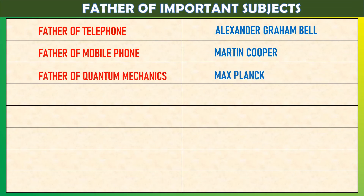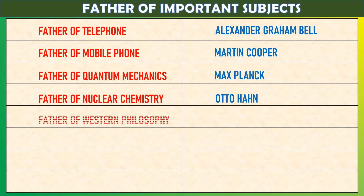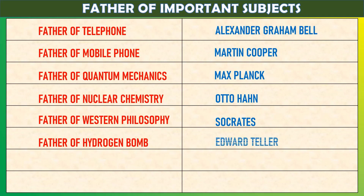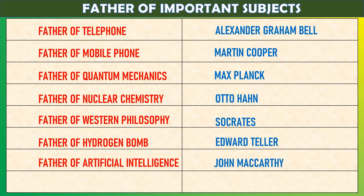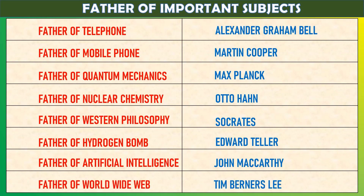Father of quantum physics: Max Planck. Father of nuclear chemistry: Otto Hahn. Father of western philosophy: Socrates. Father of hydrogen bomb: Edward Teller. Father of artificial intelligence: John McCarthy. Father of World Wide Web: Tim Berners-Lee.